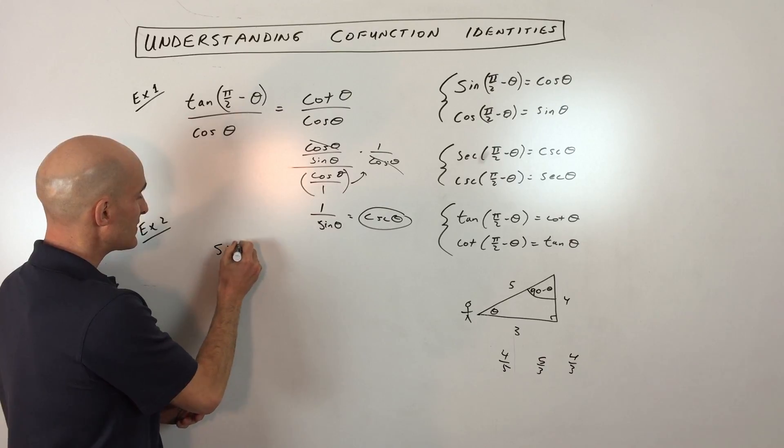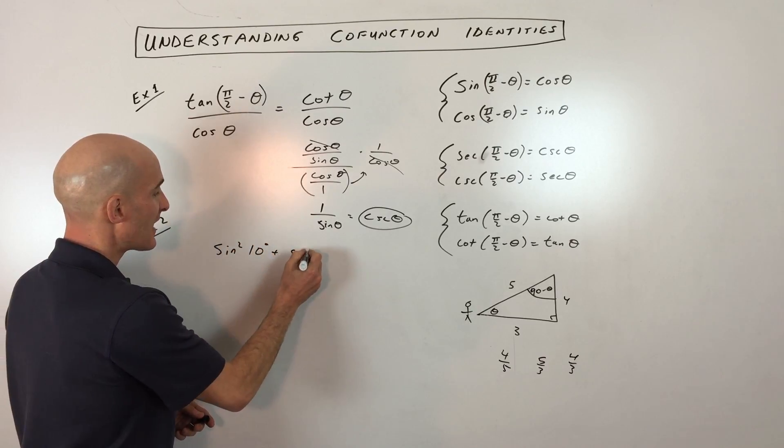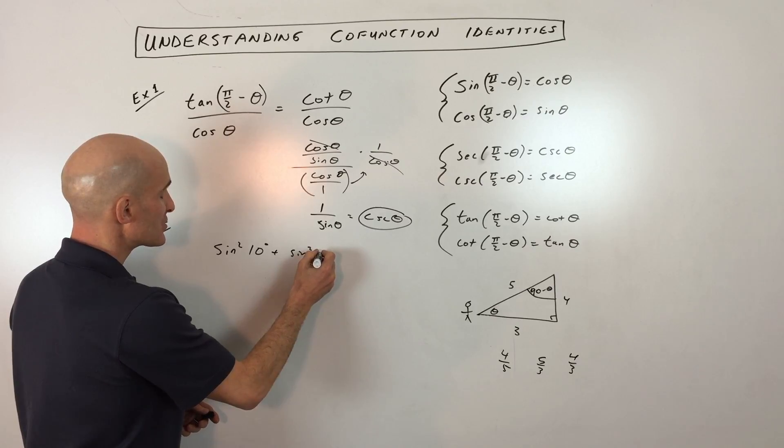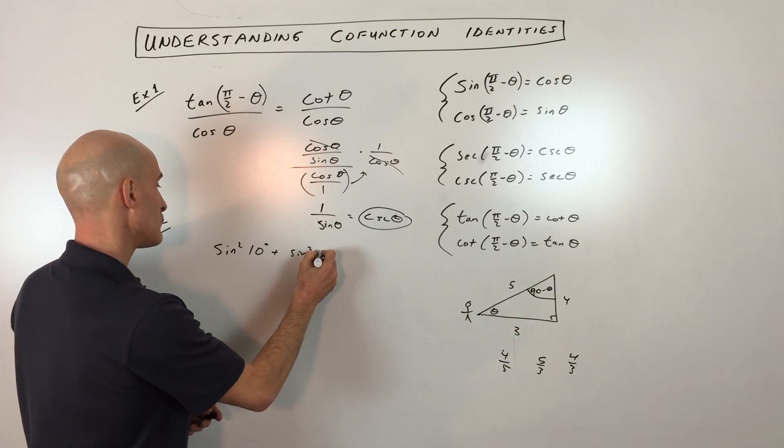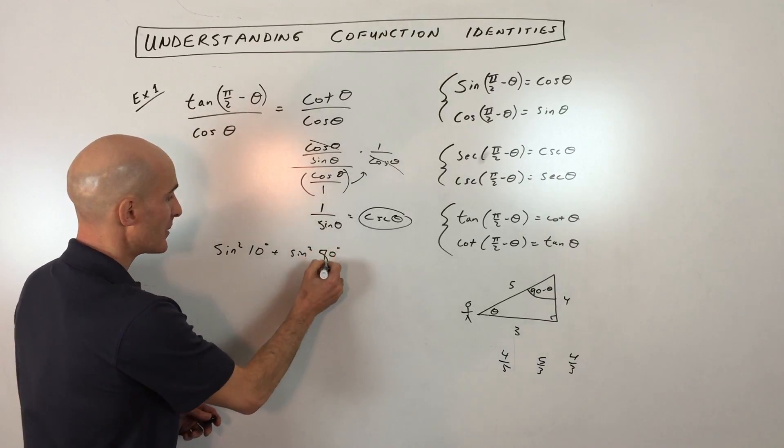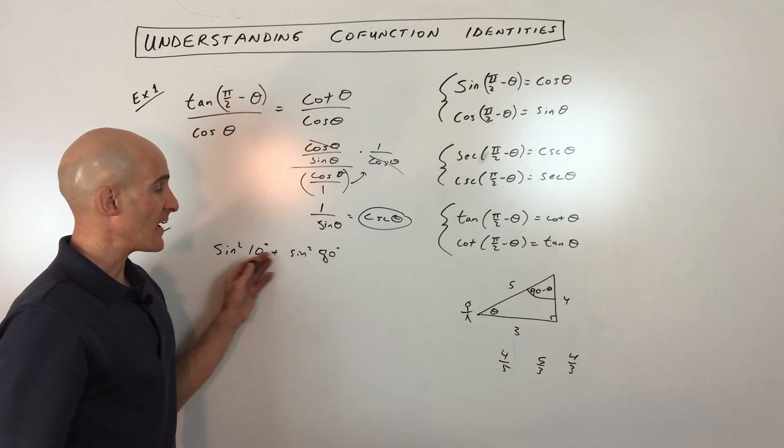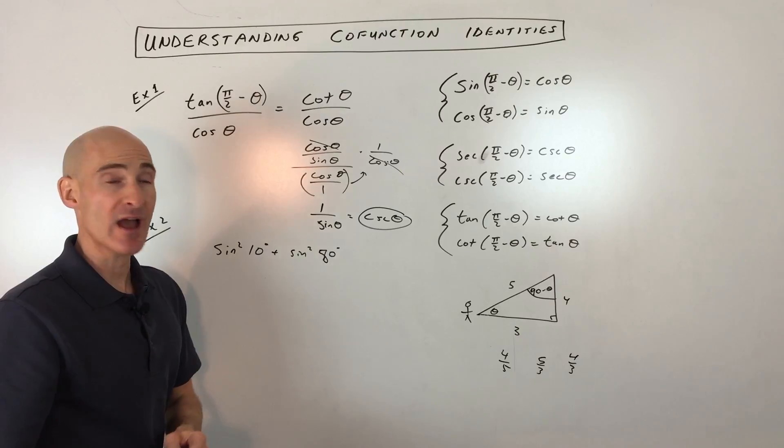Say for example, you had sine squared of 10 degrees plus sine squared of, let's just say it was, let's just say, what can we do here? Let's say maybe 70 degrees, 80 degrees. So what you notice here is that these two angles, they add up to 90 degrees. They're complementary.